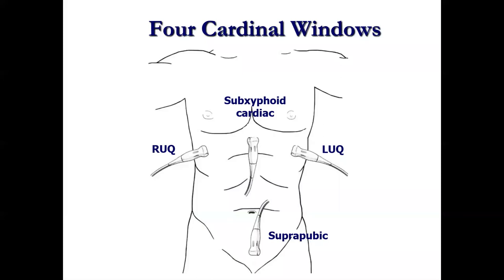What views are we looking at? We're looking at the right upper quadrant, the left upper quadrant, the heart — typically trying the subxiphoid first, then moving to the parasternal long axis if needed — and also the pelvic or suprapubic view. Many people start with the cardiac view because that's likely the most lethal pathology. If you have a pericardial effusion, it doesn't take a lot to develop tamponade. The pericardium stretches, but very slowly, so not much fluid and you can start to have tamponade. Some people start there and then typically work around in a diamond shape.